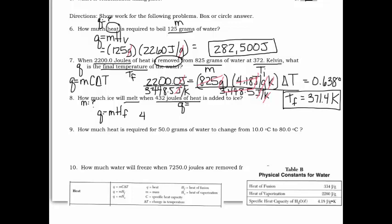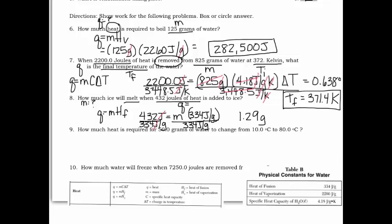Q is 432 joules. We're looking for M. H_F, the heat of fusion, is a constant from table B on the front of your reference tables: 334 joules per gram. To solve for M, divide by 334 joules per gram. The joules cancel, leaving grams. 432 divided by 334 gives us 1.29 grams. Box that in.